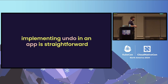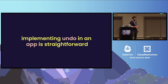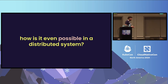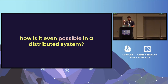Implementing an undo button in a client-side application like a word processor is not trivial, but it's fairly straightforward — you track changes and hit Command-Z to go back. But how is it even possible to roll back a distributed cloud-native application comprised of hundreds of moving parts, where there's no single component you can say 'return to the last known stable state'?